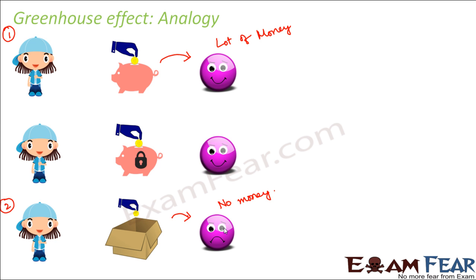Now we consider a third scenario, which is like a middle path between one and two. You have a piggy bank, but it is provided with a lock and key system. You can put your coins inside, but it is not open for anyone to take out anytime. In case of emergency, you can open the lock and take out some money. So over a period of time, you will be relatively happy — it is an intermediate situation where you have money. It is not very little, nor a very large amount either.